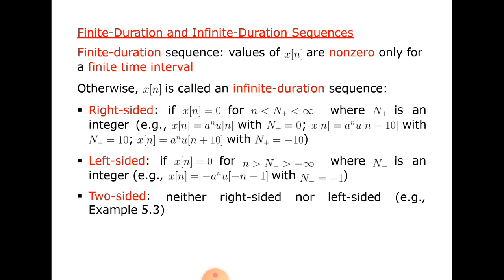This slide shows finite duration and infinite duration sequence length. Finite duration sequences have values of x(n) that are non-zero only for a finite time interval; otherwise x(n) is called an infinite duration sequence. For a right-side sequence, x(n) equals zero for modulus of n less than n₁, up to less than infinity, where n₁ is an integer.